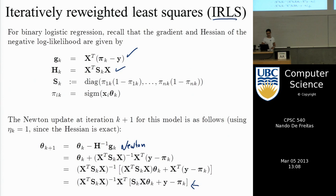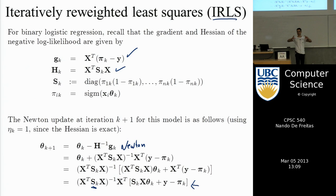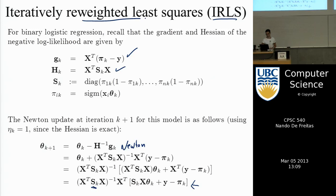At each iteration we're solving a weighted least squares problem, similar to collaborative filtering where you had a weighting matrix. The name IRLS comes from iterating what seems to be a least squares solution with a weighting matrix S. But specifying a likelihood, taking the negative log, and differentiating to get gradient and Hessian is the more natural approach — and it's the approach you'd use for any problem in machine learning, including neural networks.